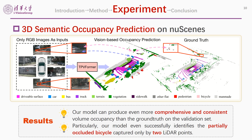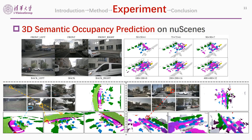For 3D semantic occupancy prediction on nuScenes, our model can produce obviously denser and even more comprehensive and consistent volume occupancy than the ground truth. Particularly, our model even successfully identifies a partially occluded bicycle far away captured by only two lidar points, which verifies the advantage of vision-centric methods. Although TPV planes are trained under a fixed resolution, we can produce predictions of arbitrary resolutions via interpolation at inference. More examples show predictions of rare and small objects such as bicycles and pedestrians barely visible even in the image.